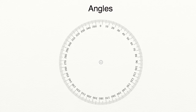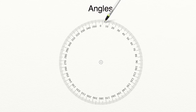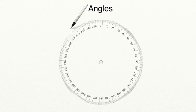To understand angles, it's important that we first understand circles. One full circle is 360 degrees. And as you can see with the protractor on the screen, it measures out each degree until we get a full circle of 360 degrees. Now we're going to use this protractor today to measure different angles.